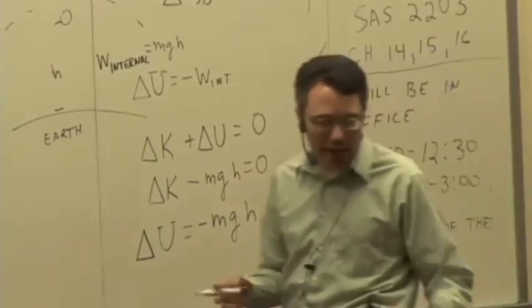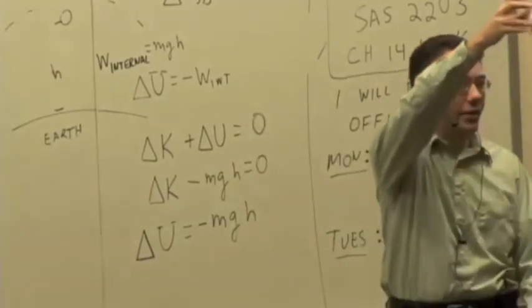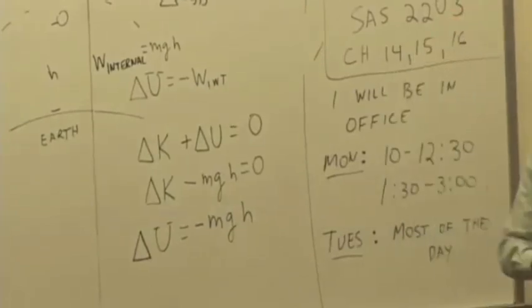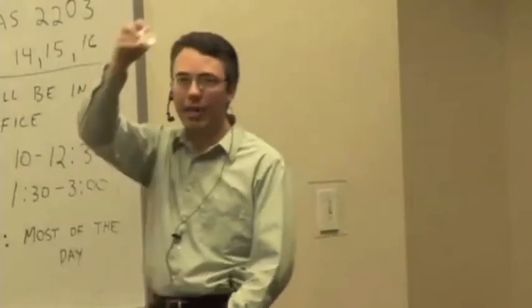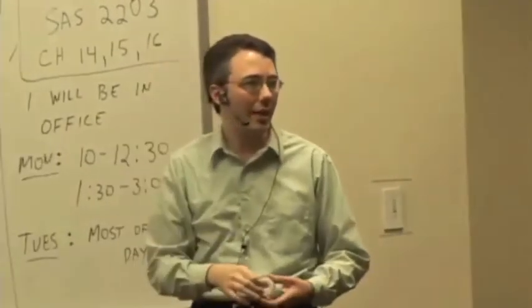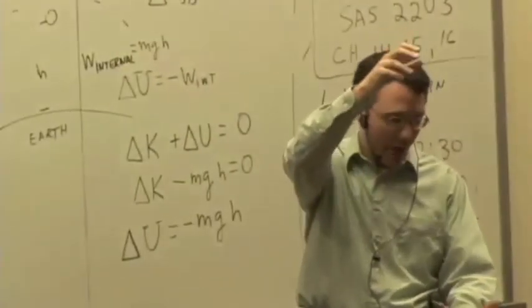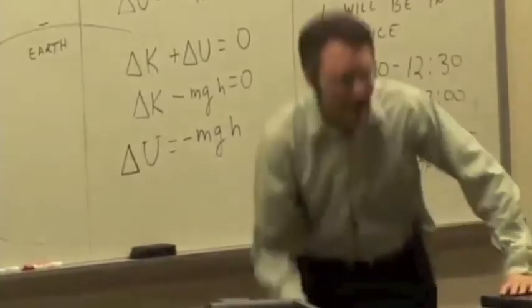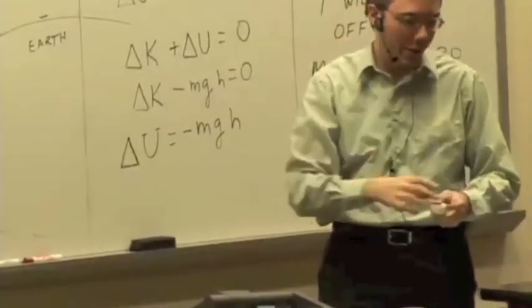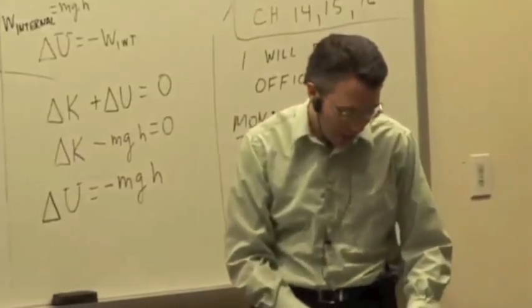Delta U is negative MGH. We let the ball go and it just fell on its own. If I have a negative change in potential energy, potential energy is going down. That's telling me something that can happen spontaneously. It will just fall on its own. I don't have to do anything external to change that potential energy, and the kinetic energy will just increase.